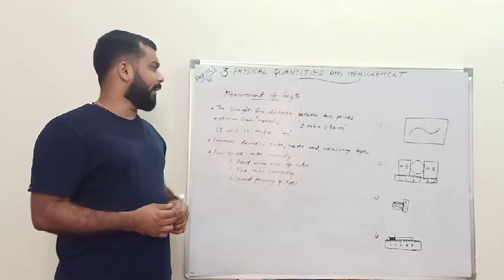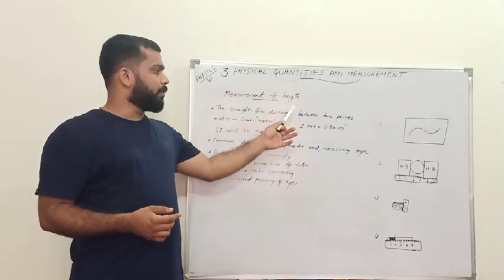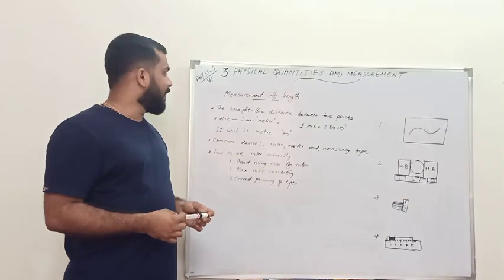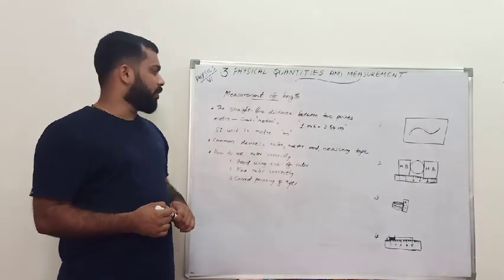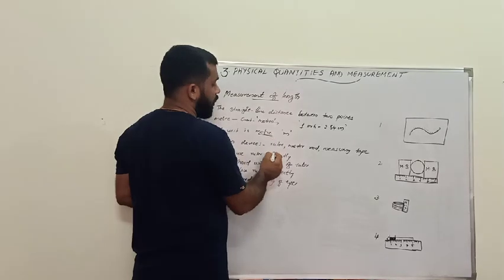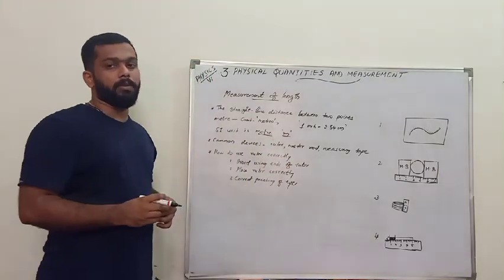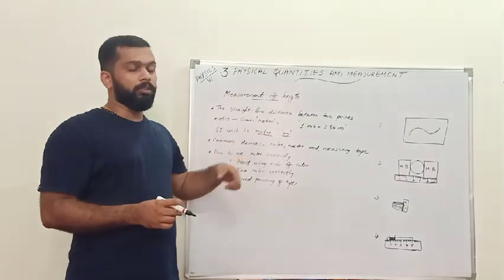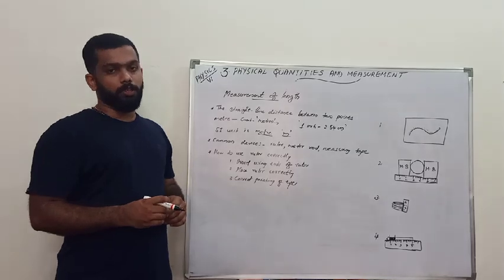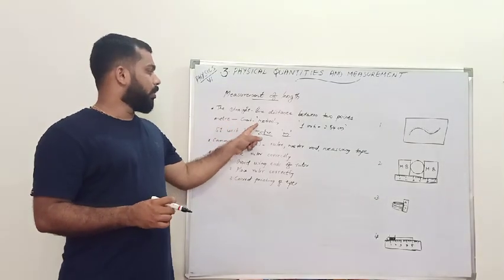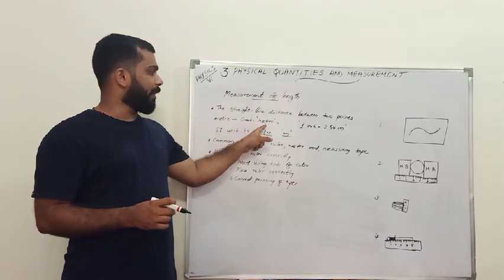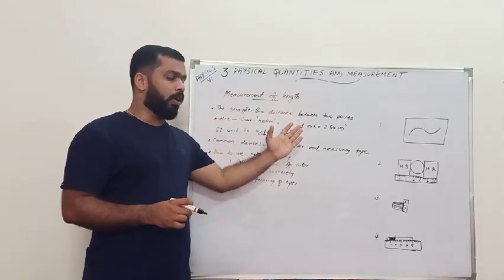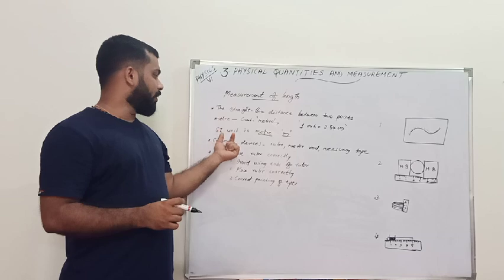The definition of length is the straight line distance between two points. This is called the length, and its SI unit is meter, represented by the small letter 'm'. The word 'meter' comes from the Greek word 'metron', which means measurement.